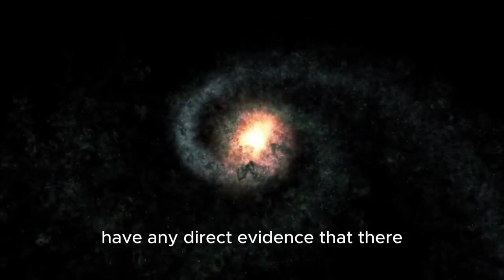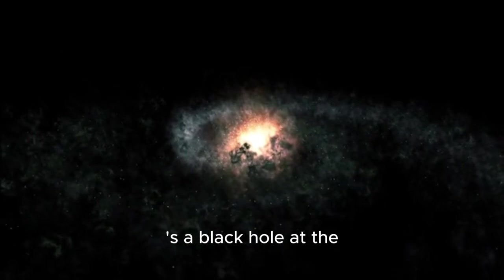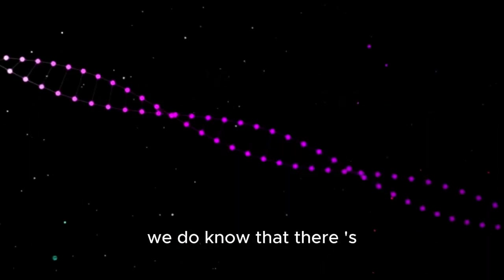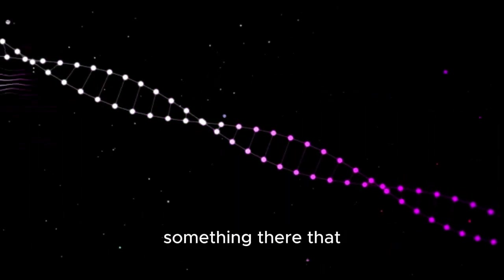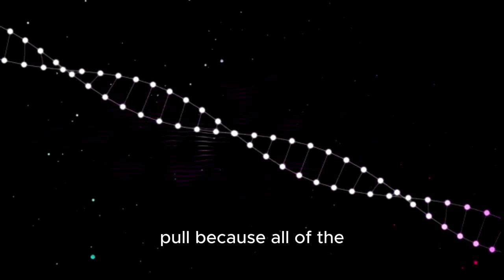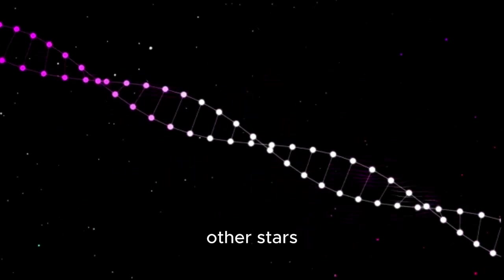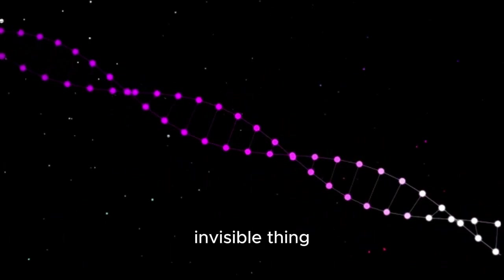Even though we don't have any direct evidence that there is a black hole at the center of our galaxy, we do know that there is something there that has a huge gravitational pull because all of the other stars seem to be orbiting around this invisible thing.